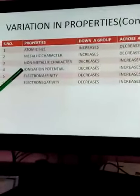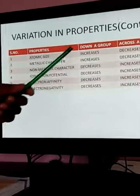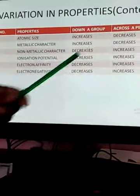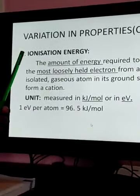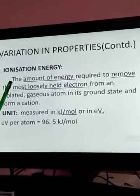But today, we will learn the fourth one, that is ionization potential. What happens to that variation down the group, it decreases and across the period increases. So, first let us talk about ionization energy, the definition of ionization energy. What is the definition?